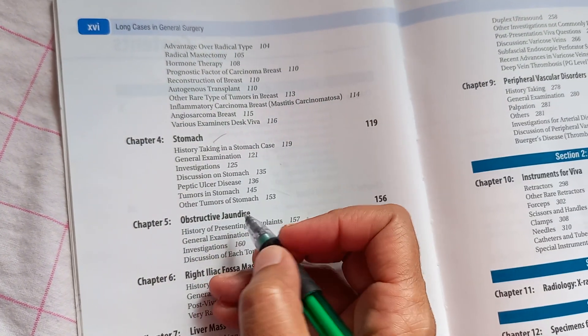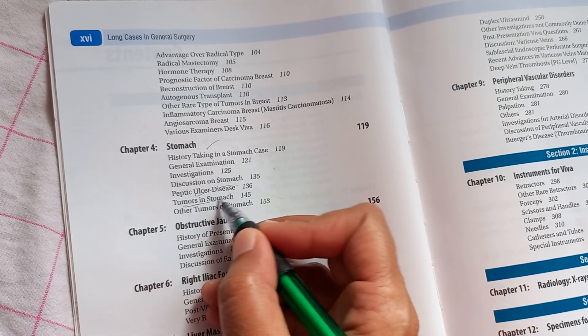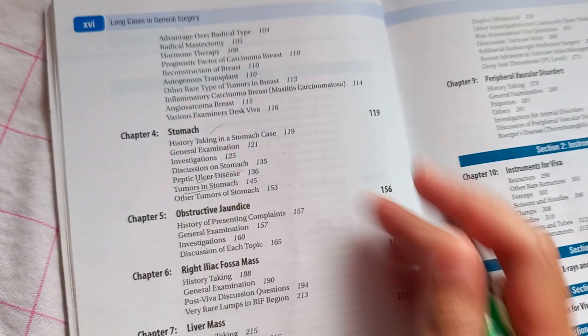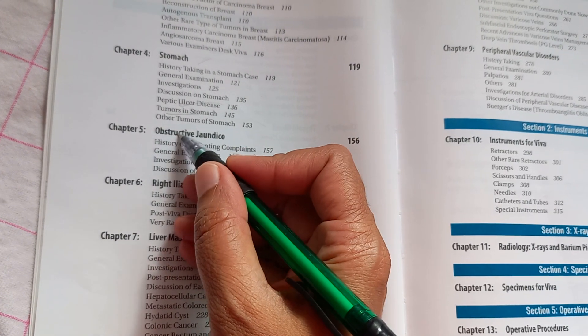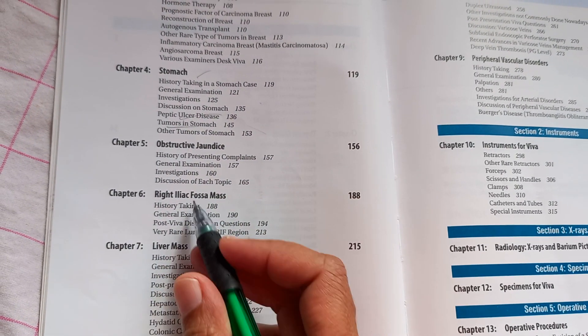Stomach, that is abdomen, pain abdomen. So you should know about what in this. Peptic ulcer disease, tumors in stomach. This are quite rare actually. Obstructive jaundice. No, this also they won't ask. Liver mass, right?